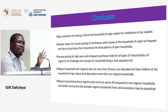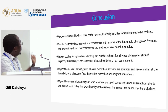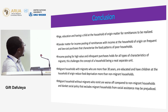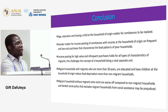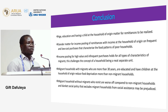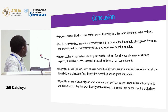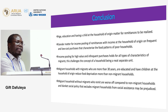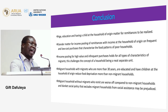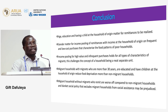In conclusion, three factors matter for remittances in Zimbabwe: age, education, and having a child at the household of origin. Gender matters for pooling income on frequent, low-cost purchases that characterize food patterns of poor households. Men also pool income on high-value, infrequent purchases like education and clothing. Finally, if a household has a migrant who is under 30, not educated, and has no child at the household of origin, that household may actually be worse off than non-migrant households — a nuance that a blanket social policy would miss.